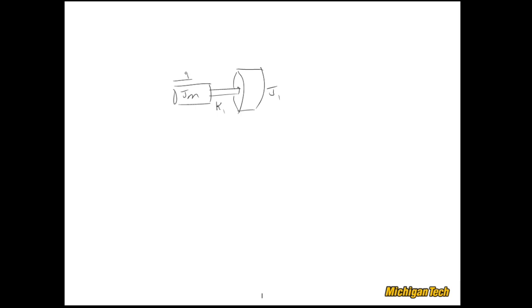Jm is held in place with a couple of blocks that it can rotate around that are anchored, and they generate a little bit of viscous damping between Jm and the fixed support, denoted with the viscous damping coefficient bm. We also have imposed onto this disk an externally applied torque, which we'll call tau_m.